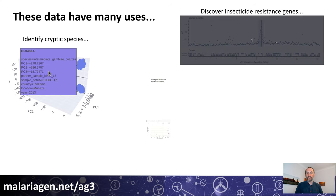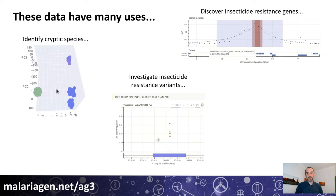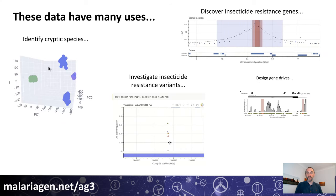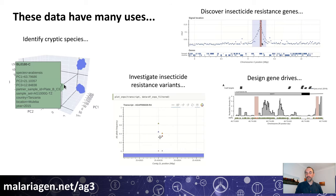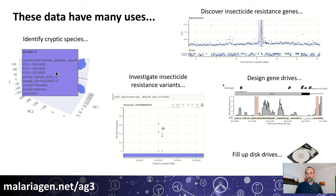You could analyse genetic variation within known insecticide resistance genes, you could identify potential gene drive target sites, or you could just use the data to fill up your disk drive.